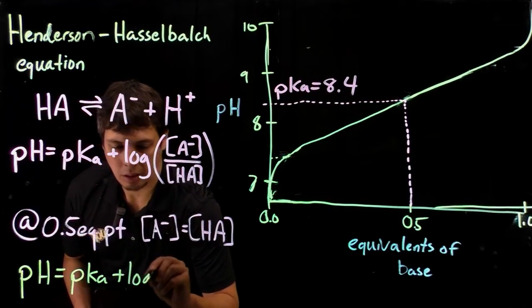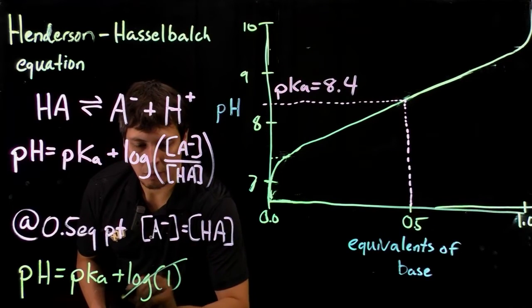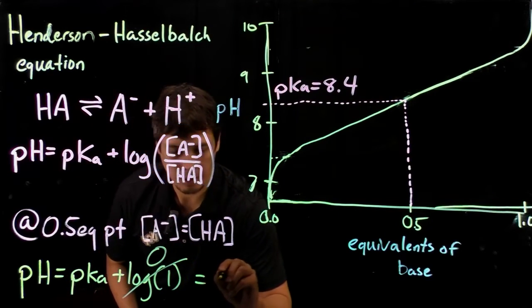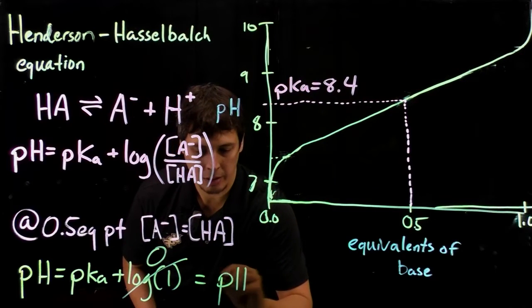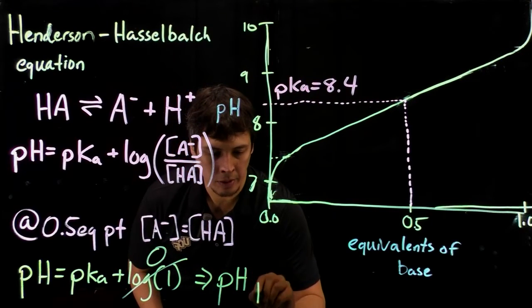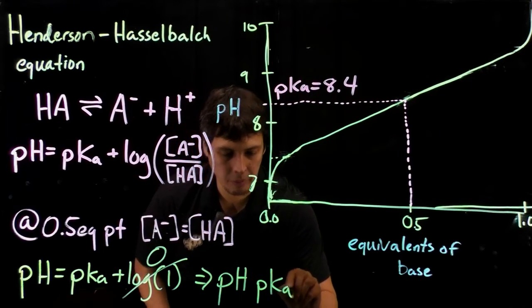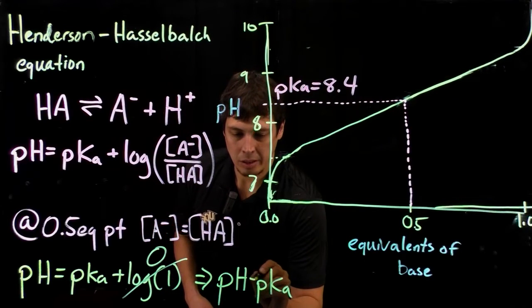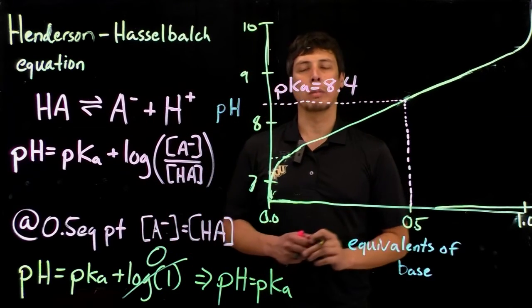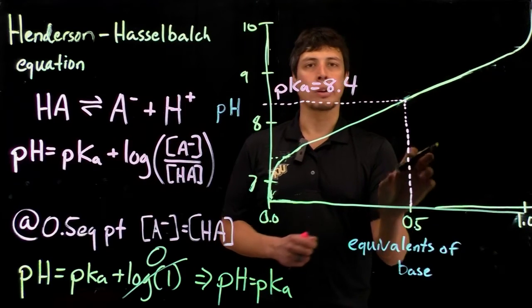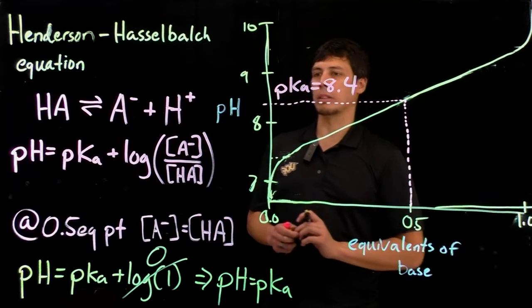The log of 1 is 0, so that means at the half equivalence point, pH is equal to pKa, and that's what we're doing by looking at the titration curve here.